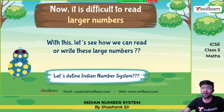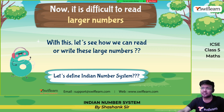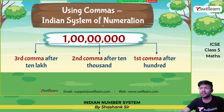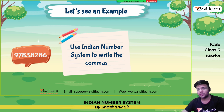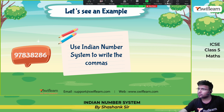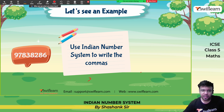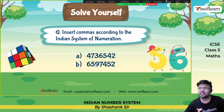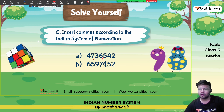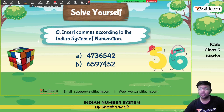Now it is difficult to read larger numbers, so let us see how we can read or write large numbers. Let's define the Indian number system using commas. In the Indian system of numeration, the first comma should be placed after the hundreds, the second comma after ten thousands, and the next comma after ten lakhs. So the first comma is placed after three digits from the right, then after every two digits. This is how you put commas in the Indian numeric system.